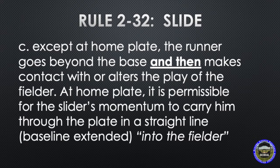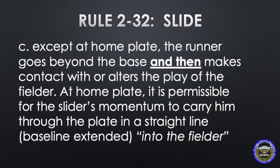This next concept is very important to understand for high school baseball. The rule states that it's an illegal slide, except at home plate, when the runner goes beyond the base and then makes contact with or alters the play of the fielder. The simple act of sliding through the base and ending up on the other side of the base is not illegal. It's only illegal if, when the runner slides through the base, he first makes contact with the fielder on the back side of the bag. For instance, if the fielder is on top of the bag, and the runner slides legally into the bag and makes contact with the fielder on top of the bag, and then ends up on the back side of the bag, that is a legal slide. It would only be illegal if the fielder was on the back side of the base, and the runner then slid through the base and made contact with the fielder on the back side of the base.